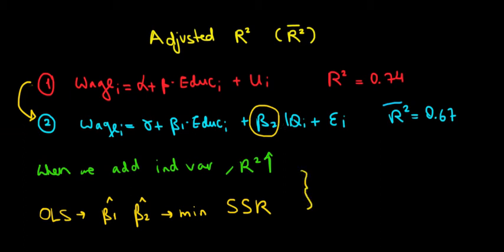By definition, the sum of squared residuals in the second model is going to be less than the sum of squared residuals in the first model. Since we have less variation in the second model, we have more variation explained by the regression.